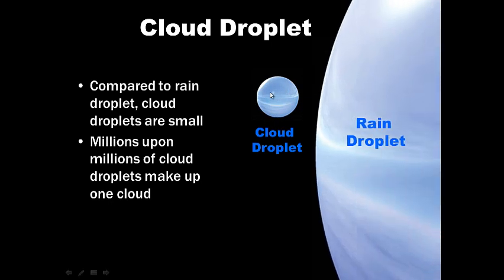Here's a cloud droplet. It's water. It's liquid water through condensation. Here's a rain droplet. So, you can see the different sizes for the comparison. Compared to rain droplet, clouds are small. Billions upon millions of cloud droplets make up one cloud.